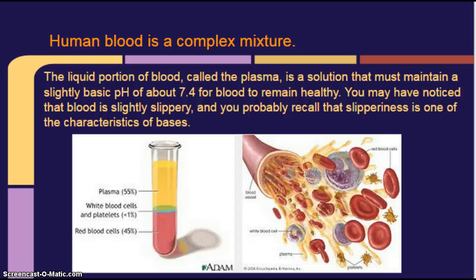Human blood is a complex mixture. The liquid portion of blood, called plasma, is a solution that must maintain a slightly basic pH of 7.4 for blood to remain healthy. You may have noticed that blood is slightly slippery. And you probably recall that slipperiness is one of the characteristics of bases.